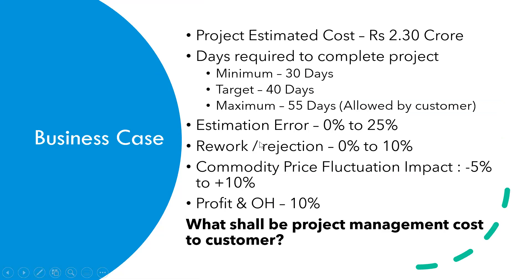Here there is one project — the estimated cost is around 2.3 crore. As per the project management team, they would require around 30 days minimum to complete the project, but targeting with a buffer of 10 days, up to 40 days, they think they can complete the project. The customer in the tender has allowed up to 55 days, so even if they can't complete it within 40 days, they have the threshold of up to 55 days.